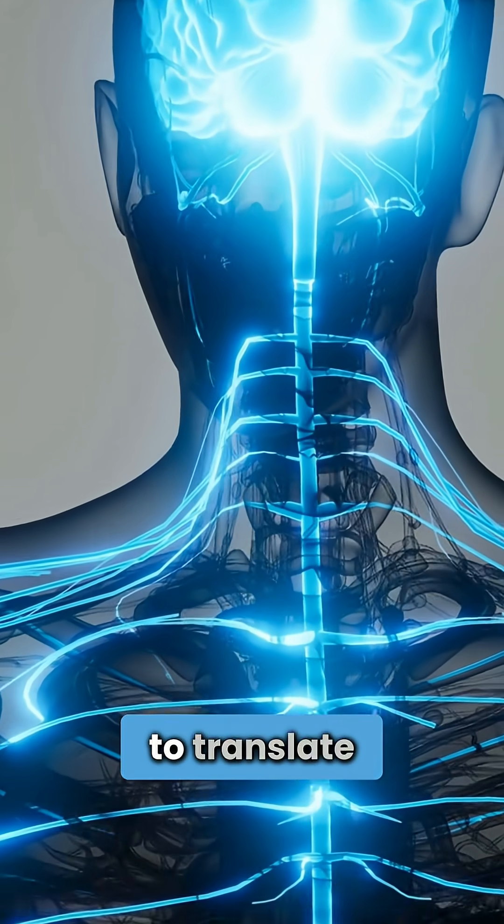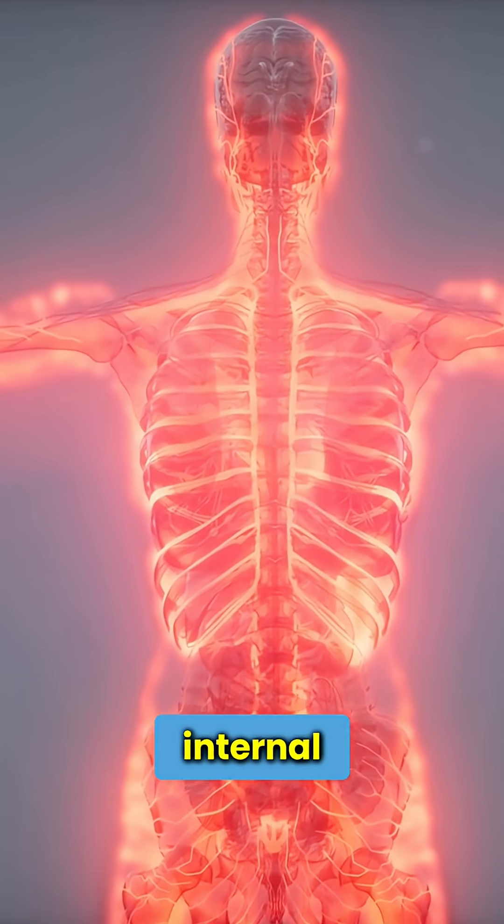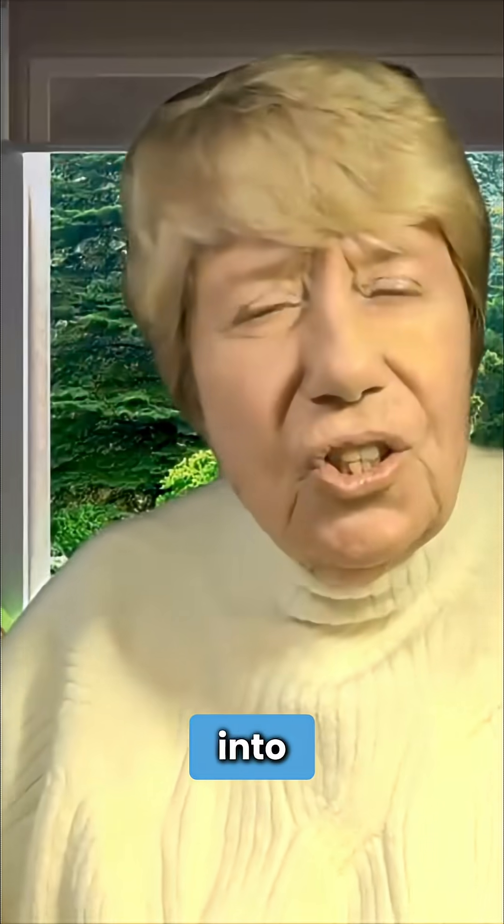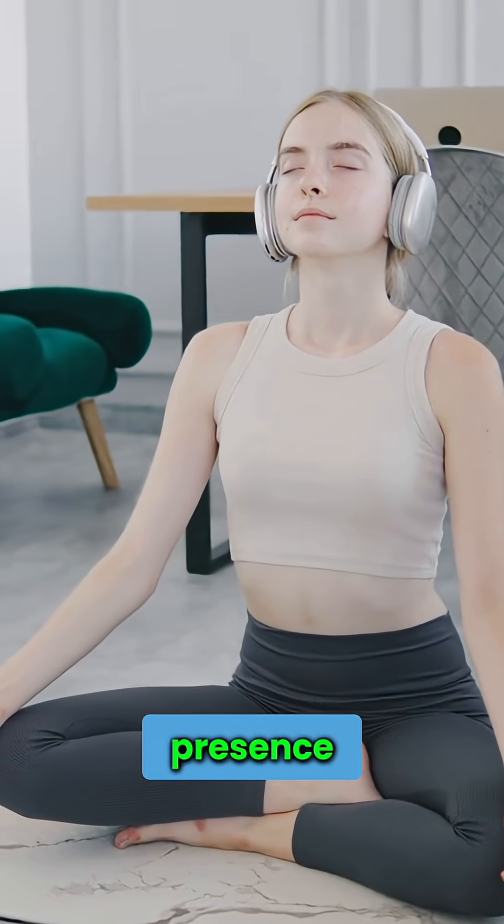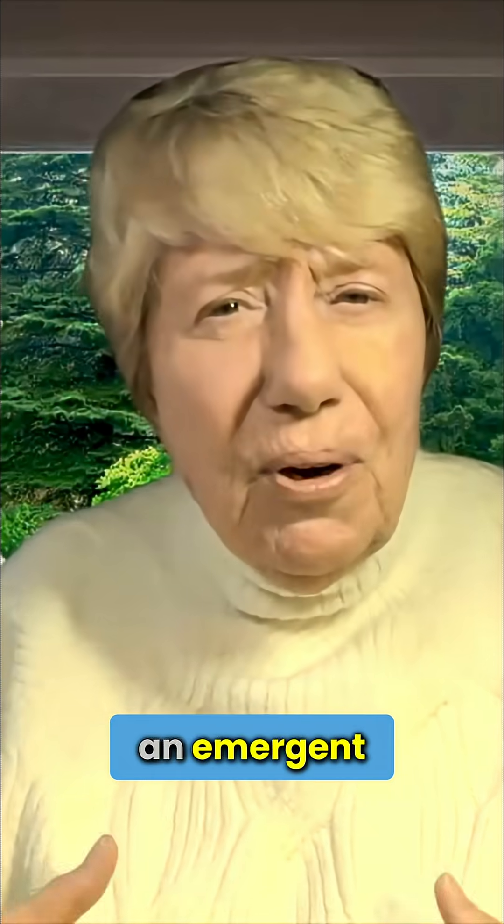Fascia enables the nervous system to translate internal physiological signals into embodied behavior, shaping posture, breath, affect, presence as a kind of emergent property.